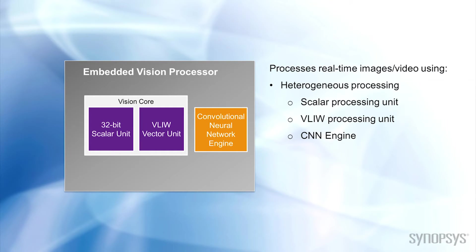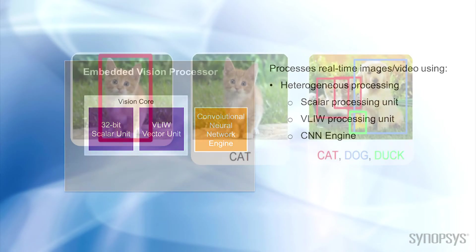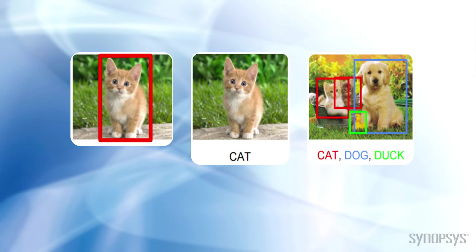The latest state-of-the-art embedded vision processors also include a dedicated convolutional neural networking engine for handling object detection, classification, and recognition tasks.